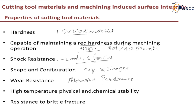Next, high temperature physical and chemical stability — even at higher temperatures, the tool should not chemically react and should not lose its shape. That is what physical and chemical stability means. Also, resistance to brittle fracture: the cutting tool should not fail in a brittle manner.